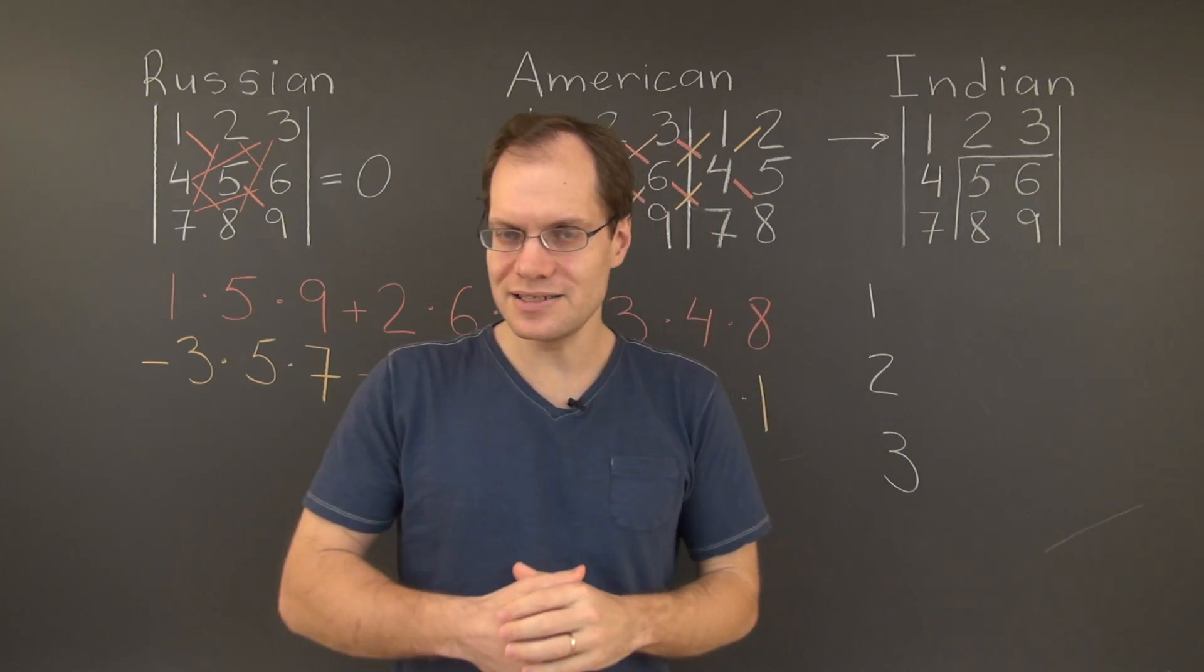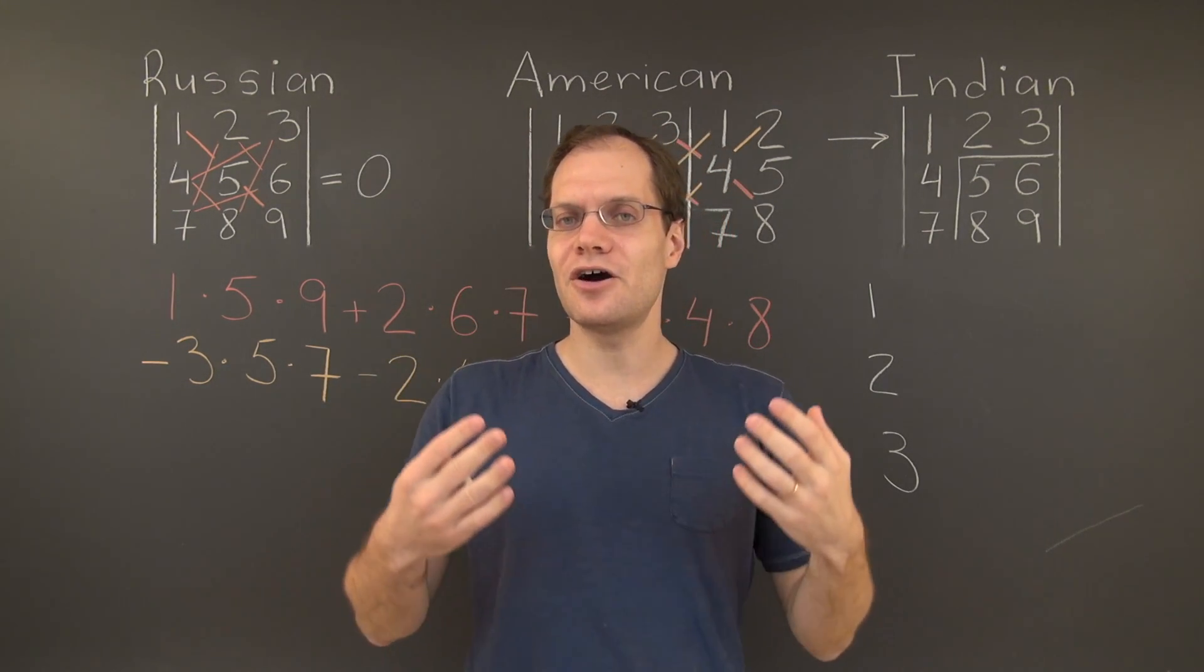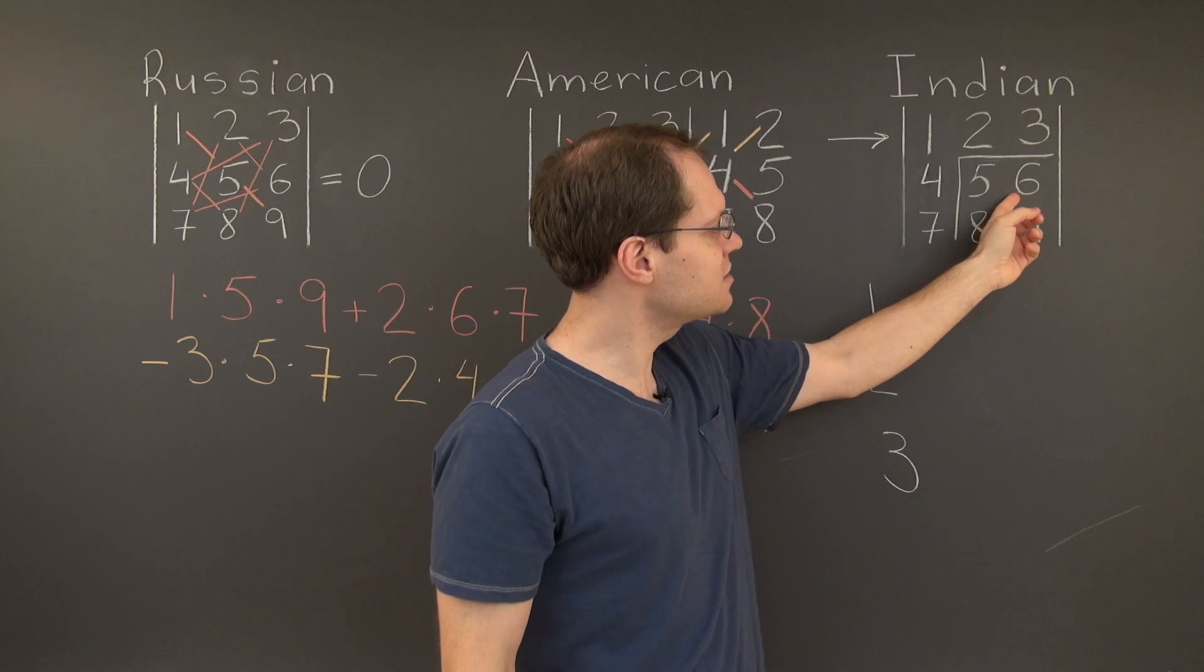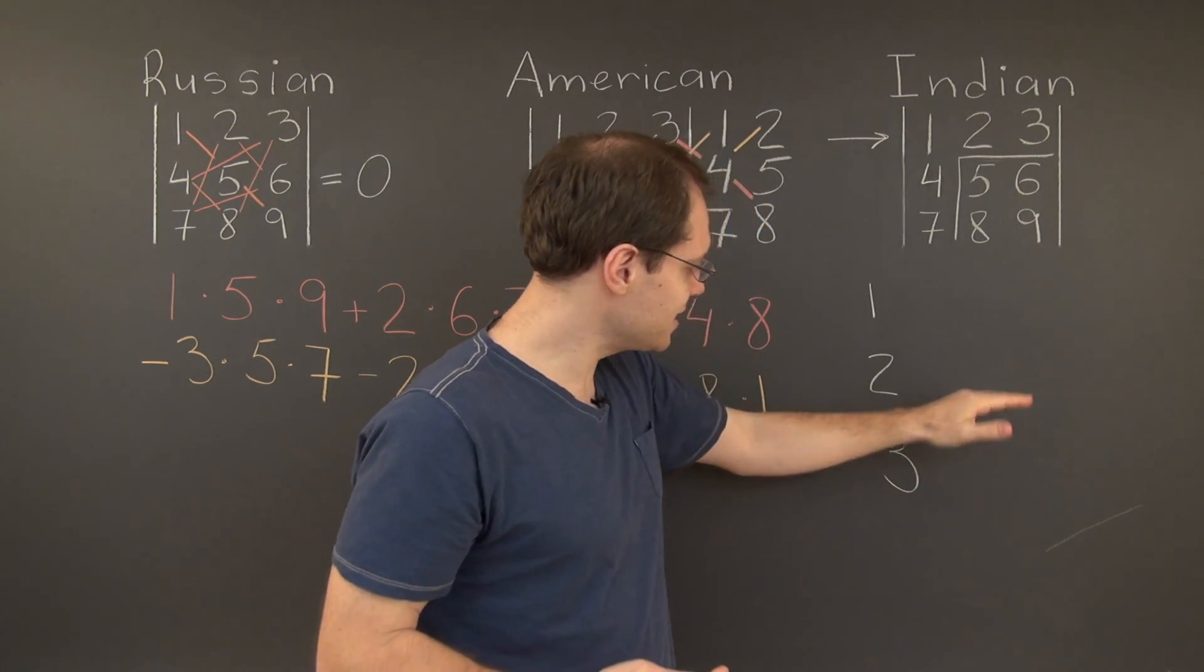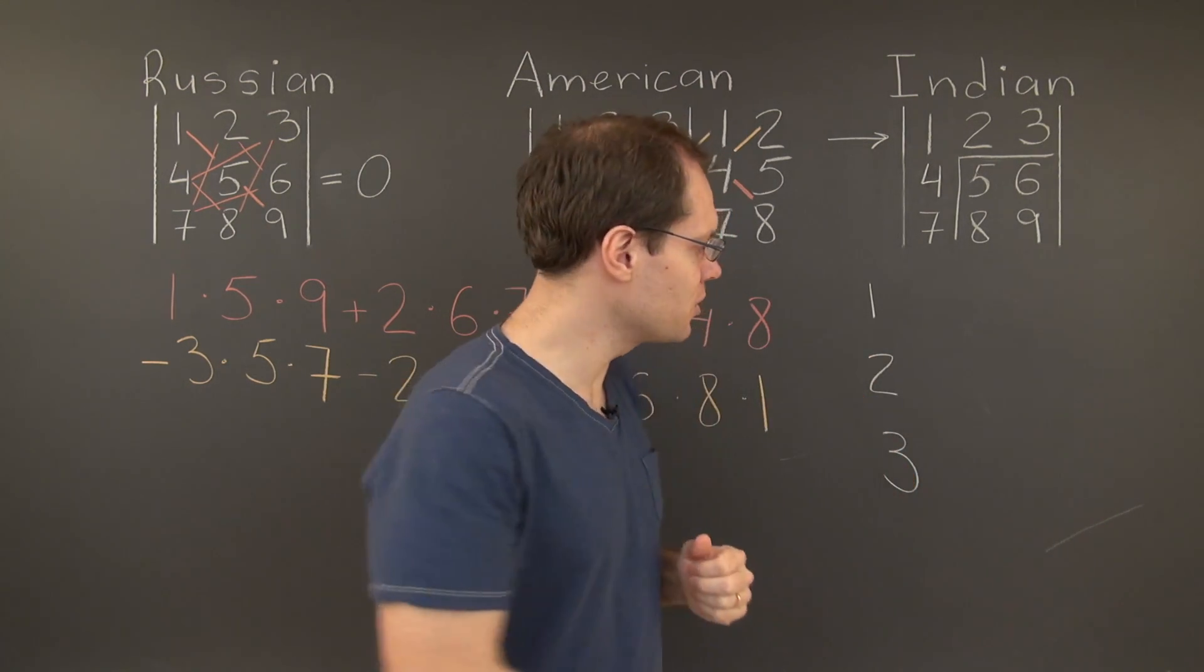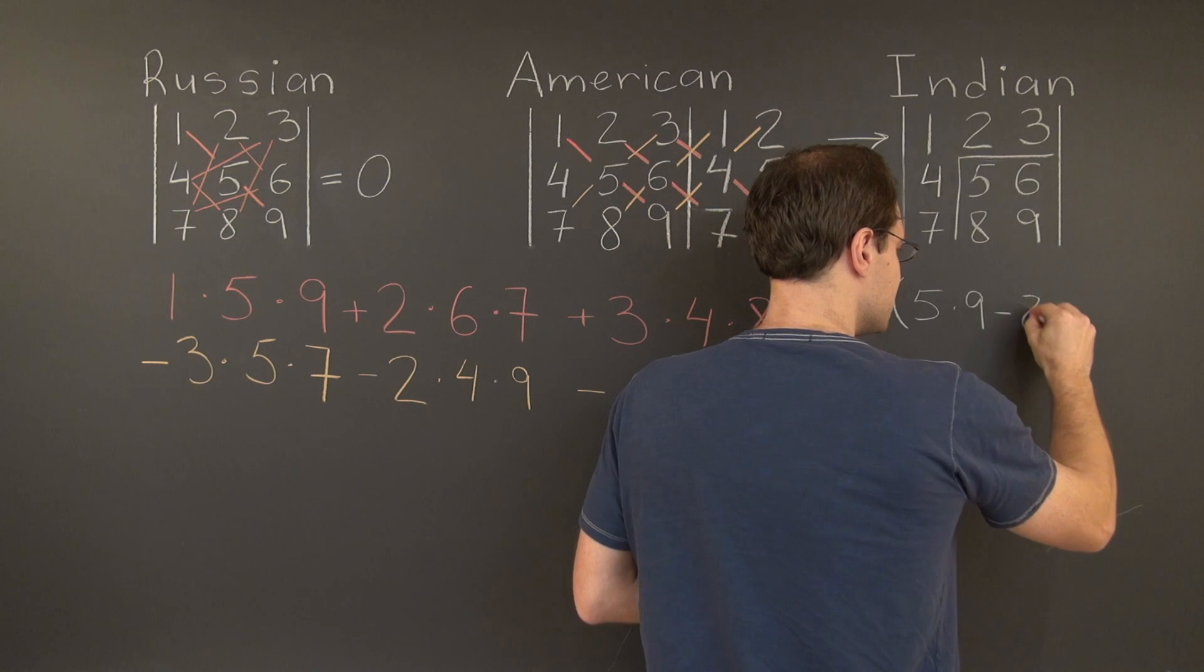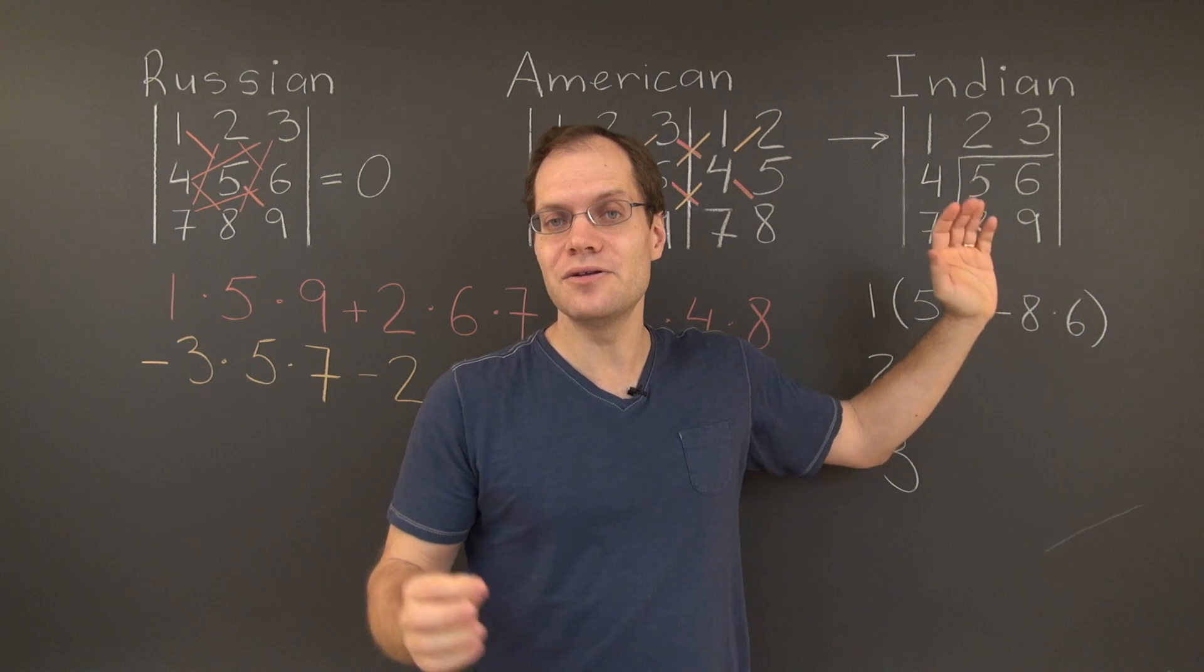And the great advantage of the Indian approach is that the simple 2x2 determinant can be evaluated on the fly. You can do it in your head. You don't have to write it down, because after all, it's 45 minus 48. That's simply negative 3. So we'll do it for the next two terms. In this case, we'll simply write it down to make another point. But it's important to keep in mind that you don't have to write this down. You can simply evaluate this 2x2 determinant. And in place of this long expression, simply write down minus 3.